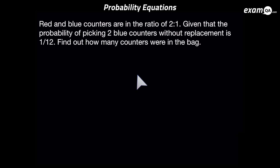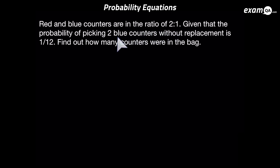Let's start by looking at this question. We're told that the ratio of red and blue counters is 2 to 1, and we're also told the probability of picking two blue counters. We need to work out the number of counters in the bag.